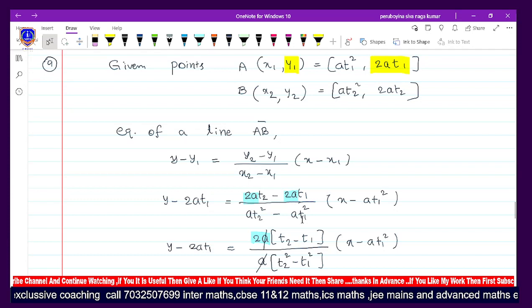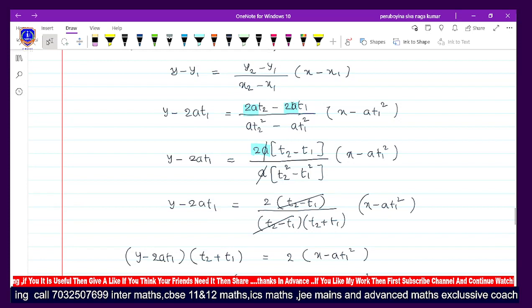In the numerator we can factor out 2. Let me highlight this. 2a₂ minus 2a₁, remaining all terms with no changes. In the denominator, a₂² minus a₁². We can cancel the (a₂ - a₁) terms from numerator and denominator.